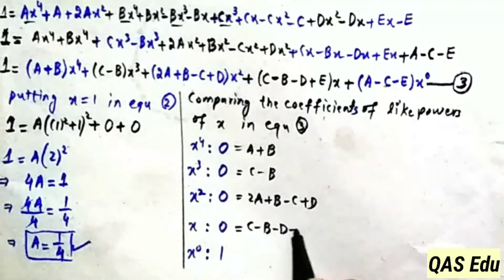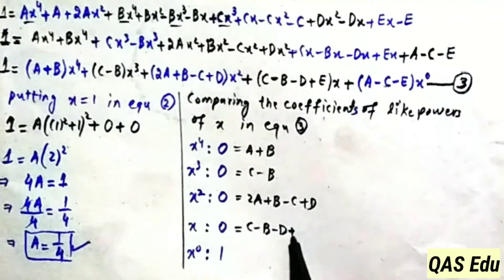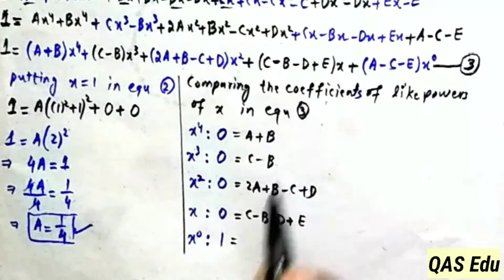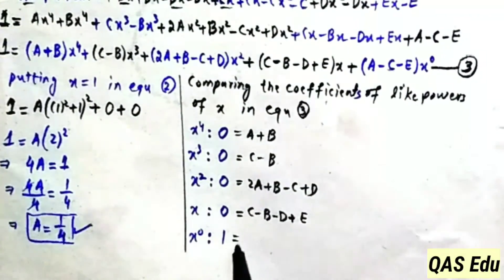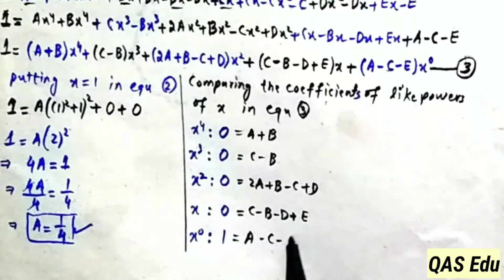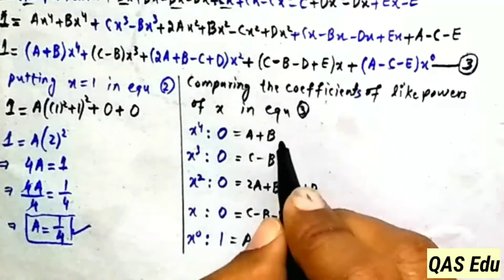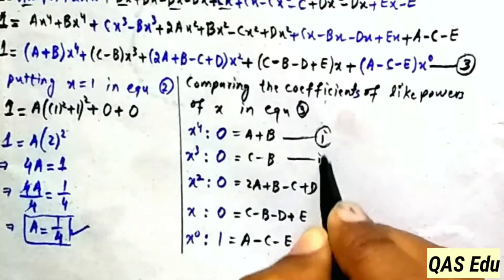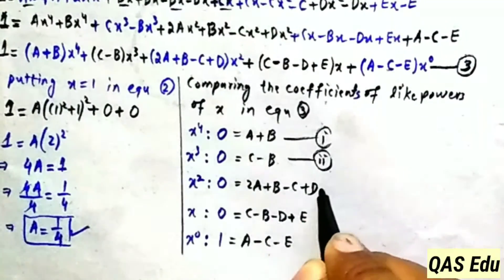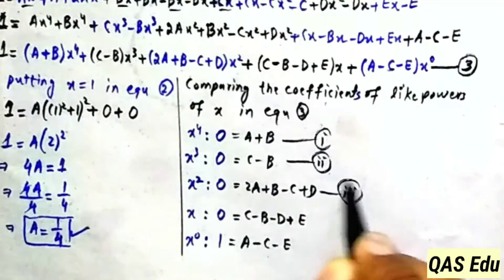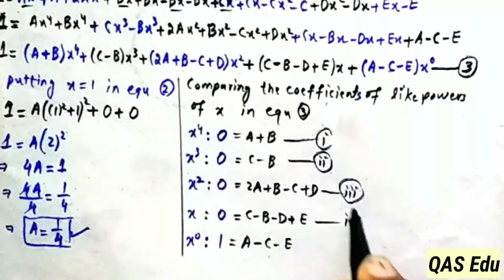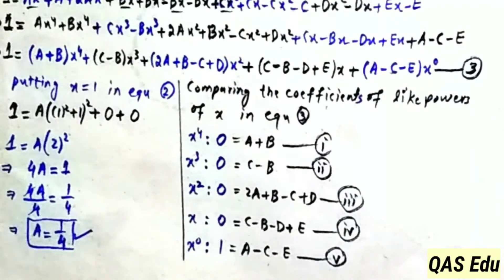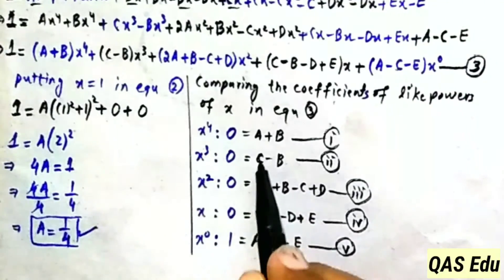For x square the coefficient is 2A plus B minus C plus D. For x the coefficient is C minus B minus D plus E. For the constant term on the right-hand side of equation number 3, it is A minus C minus E. We now have equations numbered 1 through 5.